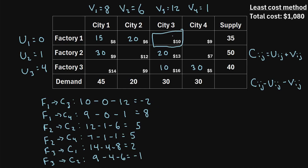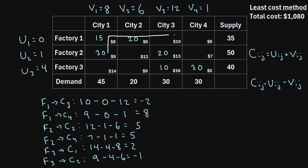What we're going to do is draw a closed loop using only horizontal and vertical lines in which the loop only touches allocated cells. Starting at that cell, we draw a line to an allocated cell, then a vertical line to another allocated cell, then to another cell and back to our original cell. We draw alternating plus and minus signs in those cells: a plus sign in the starting cell, a minus sign in the next cell visited, a plus sign in the next, and a minus sign in the last.